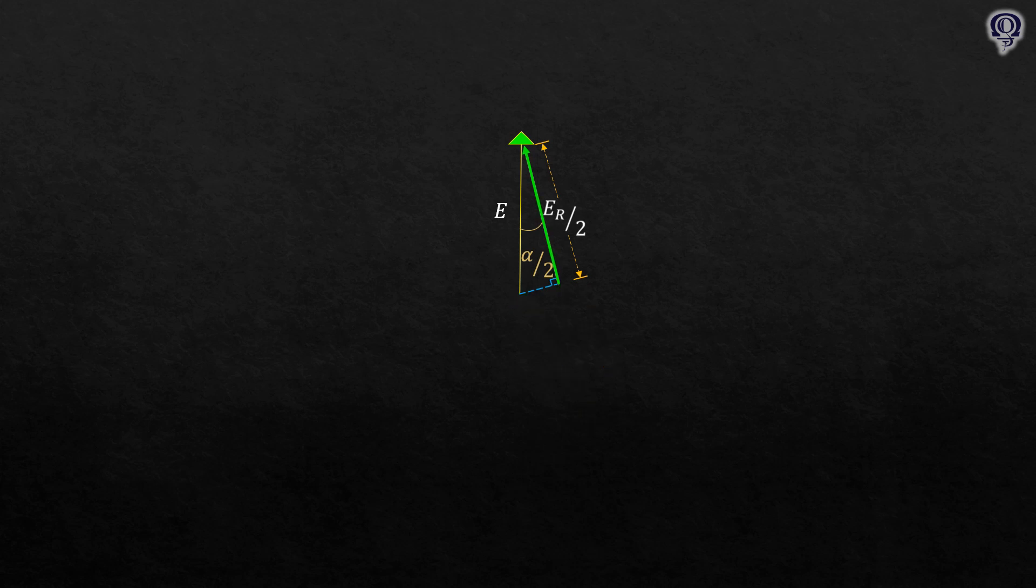Looking at half of this triangle, we can easily figure out that the cosine of alpha over 2 is equal to ER over 2 all over E. Rearranging this would give us the equation for ER. We'll call this equation 2.